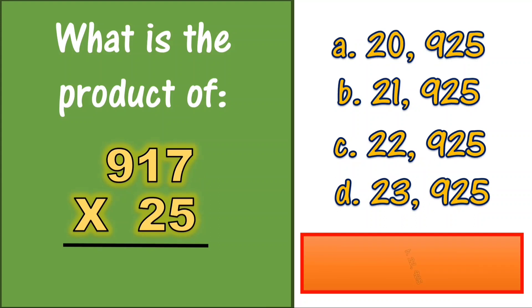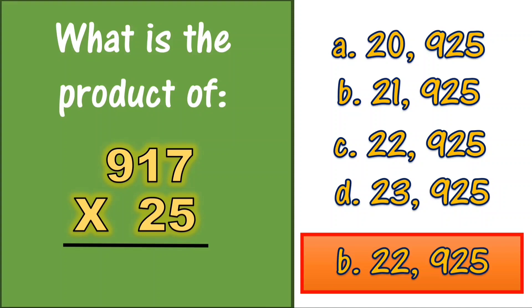What is the product of 917 times 25? A. 20,925  B. 21,925  C. 22,925  D. 23,925